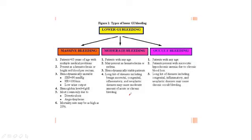In massive bleeding, the patient is usually over 65 years of age with multiple medical problems, which can cause massive bleeding. It presents with hematochezia or bright red blood per rectum. Hemodynamically, the patient could be unstable — systolic blood pressure less than 90, heart rate over 100, low urine output, and hemoglobin below 6. The most common causes of massive bleeding in the elderly are diverticulosis and angiodysplasia.